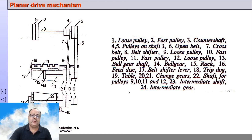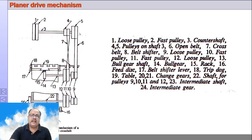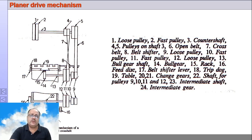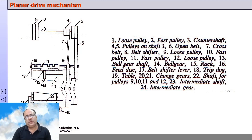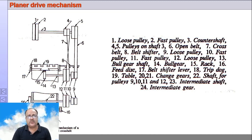This is how the planer drive mechanism works. The quick return is achieved because during the forward stroke, you want maximum power and less speed — the cross belt drive gives maximum contact area between belt and pulley, transmitting maximum power at less speed (small pulley to large pulley). Whereas during the return stroke, it goes from large pulley to small pulley with an open belt drive, giving less power and more speed, so the return stroke is faster. This is one of the drive mechanisms — not all planers use this mechanism; there are other mechanisms that can also be implemented.